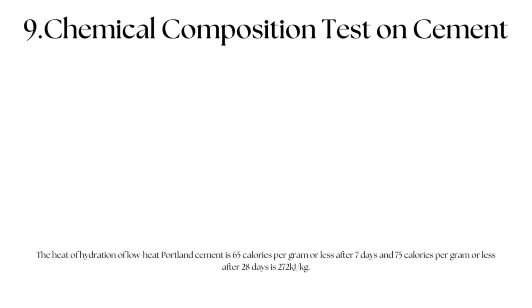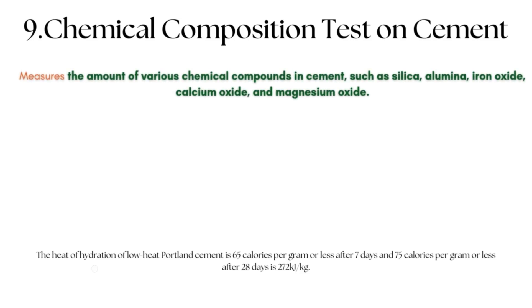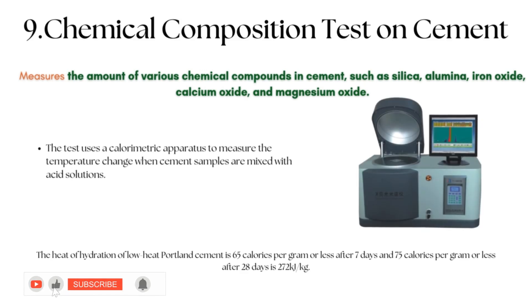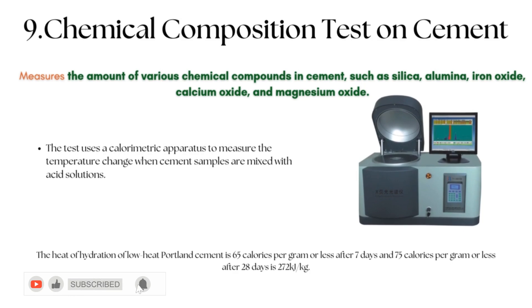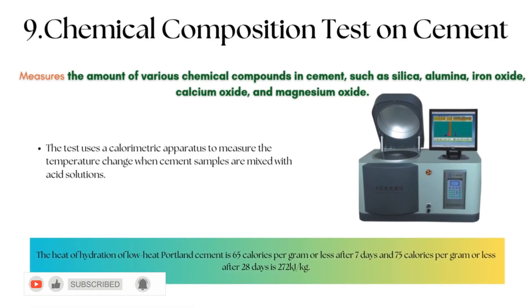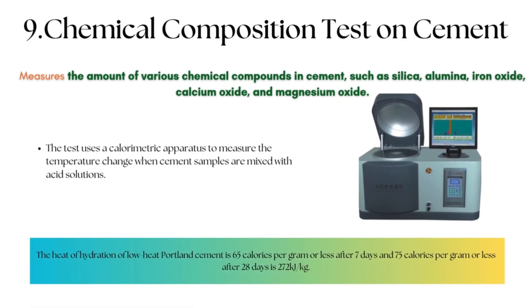Chemical Composition Test on Cement: A chemical composition test measures the amount of various chemical compounds in cement, such as silica, alumina, iron oxide, calcium oxide, and magnesium oxide. An X-ray fluorescence (XRF) spectrometer is used to analyze the chemical composition in a non-destructive, quick, and accurate way. XRF is a preferred method for cement analysis as it can be used at various stages of cement production, from the quarry to the finished product.